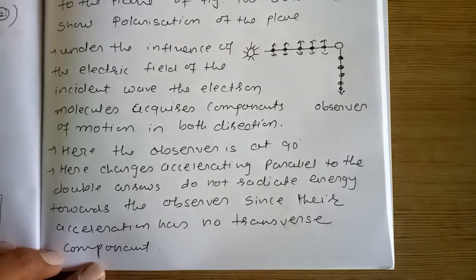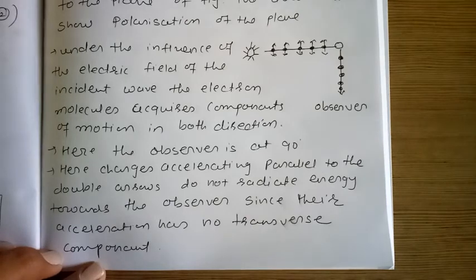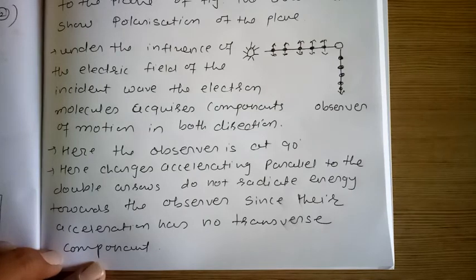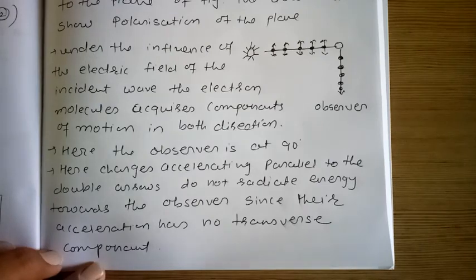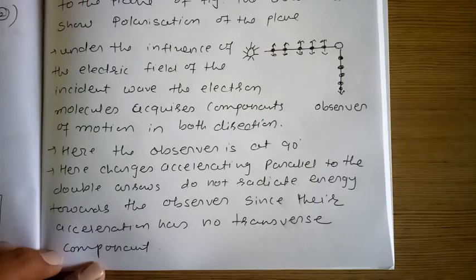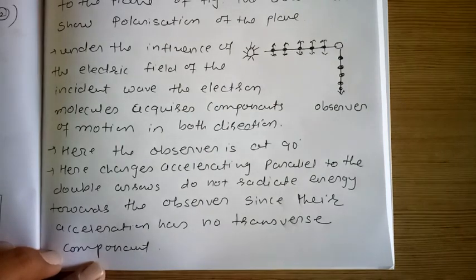The scattering of light by molecules was investigated by C.V. Raman, and C.V. Raman was awarded the Nobel Prize for Physics in 1930 for this work.